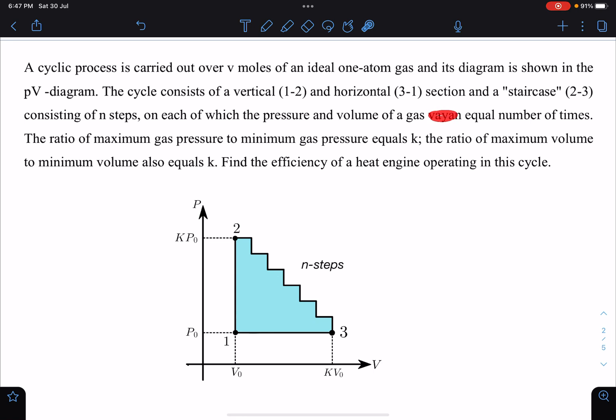The ratio of maximum gas pressure to minimum gas pressure equals k. So here you can see this is KP₀ and this is P₀.